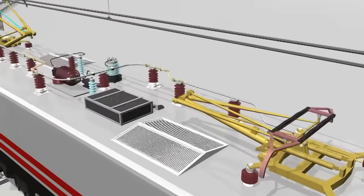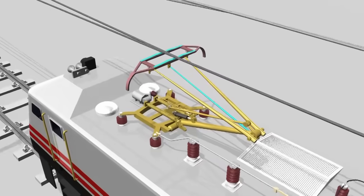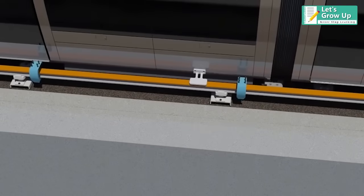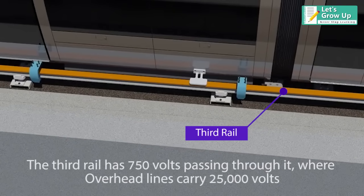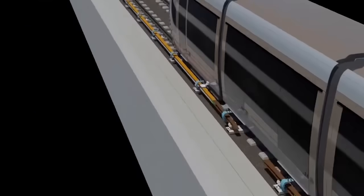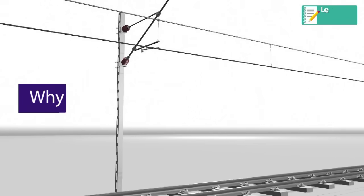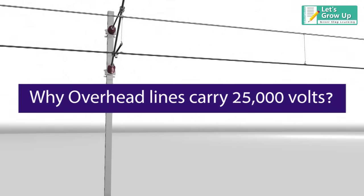Sometimes called the third rail, the third rail has 750 volts passing through it, where overhead lines carry 25,000 volts. Here is a question: why do overhead lines carry 25,000 volts?